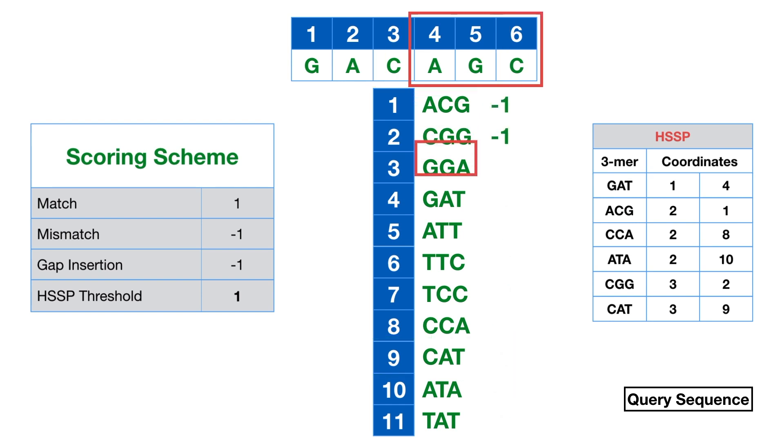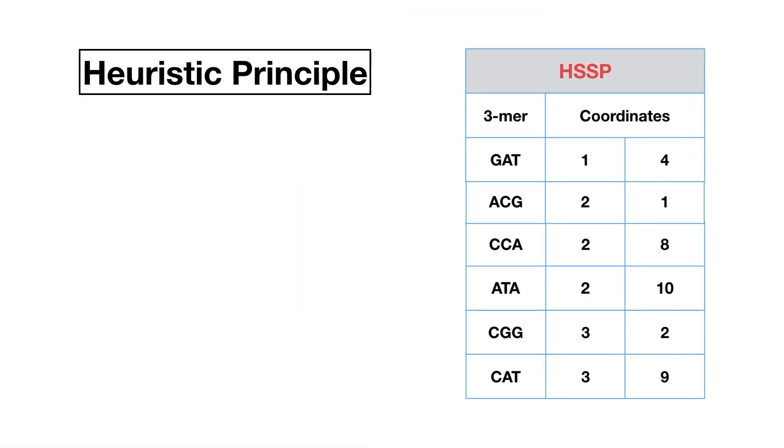Finally, we align the 4th K-mer of the query sequence with the indexed K-mers. No further HSSPs are found. The heuristic principle behind BLAST is that significant local alignment should contain an HSSP.